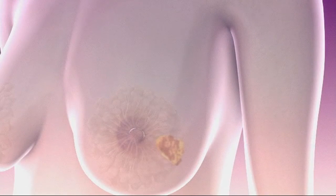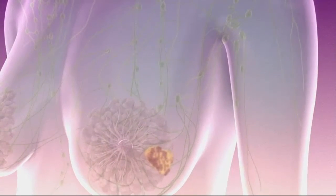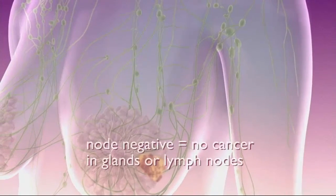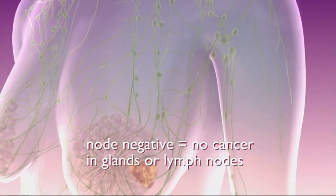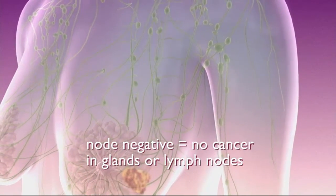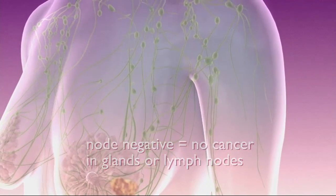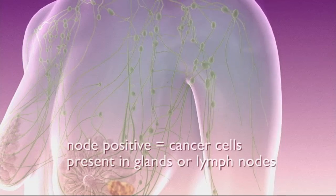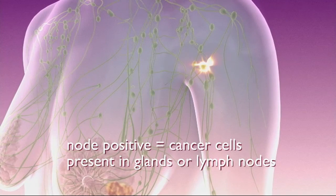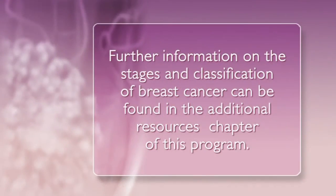The nodal status of your cancer simply indicates if the cancer is present in the glands or lymph nodes. Node negative means there are no cancer cells present in your glands or lymph nodes. Node positive means there are cancer cells present in your glands or lymph nodes.